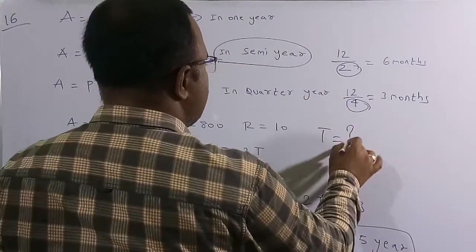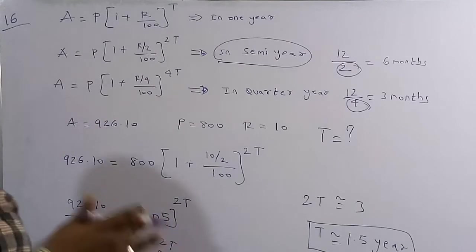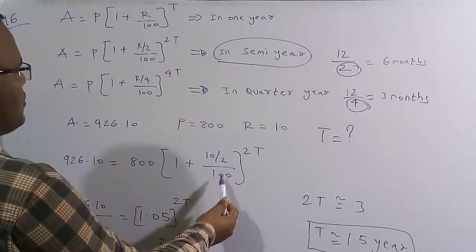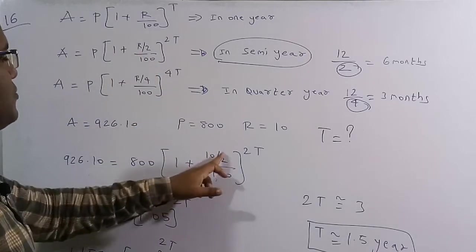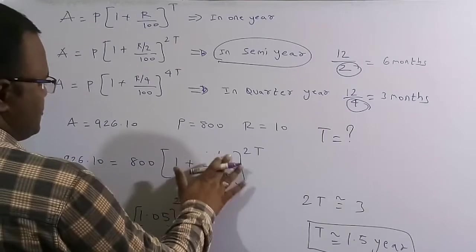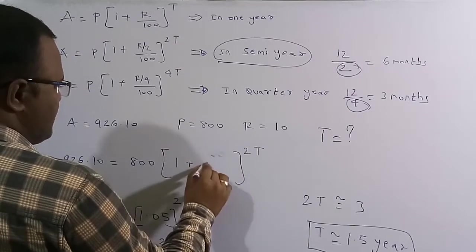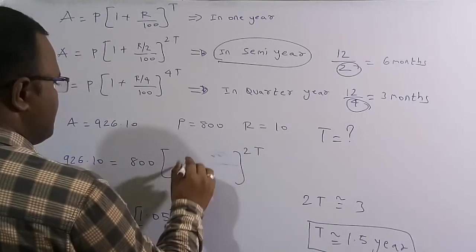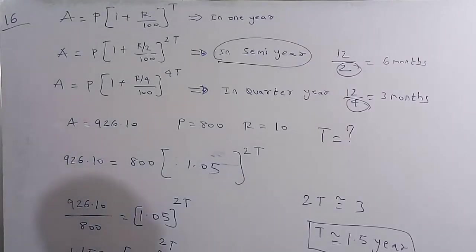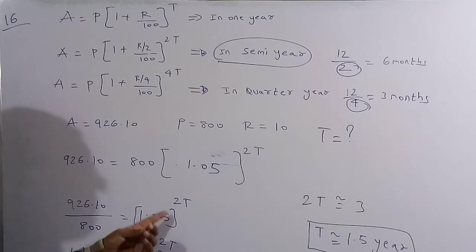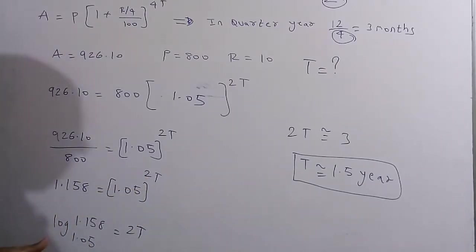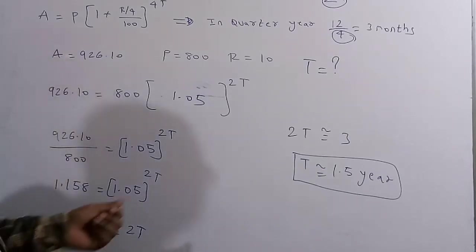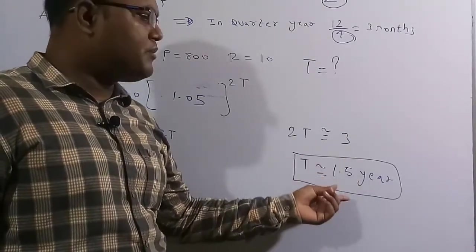Dividing both sides by 800: 926.10/800 ≈ 1.158 = (1.05)^(2t). Taking logarithm base 1.05: log₁.₀₅(1.158) ≈ 3, so 2t ≈ 3, giving t ≈ 3/2 = 1.5 years.